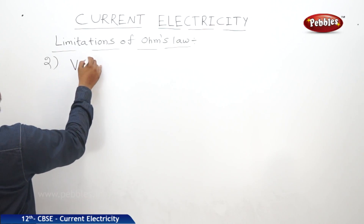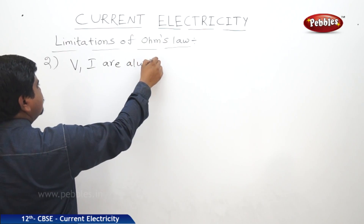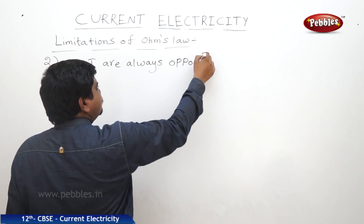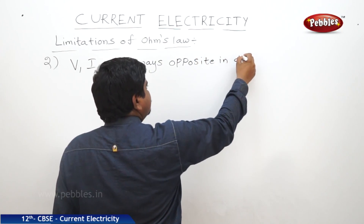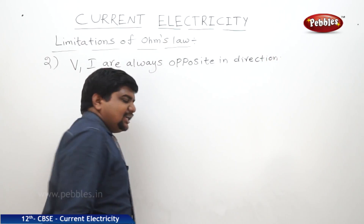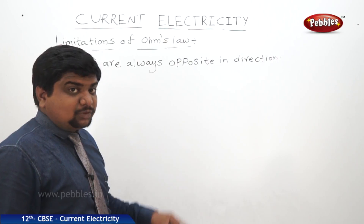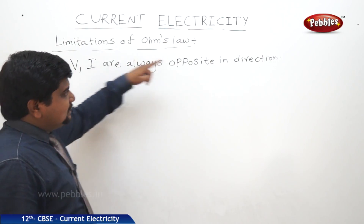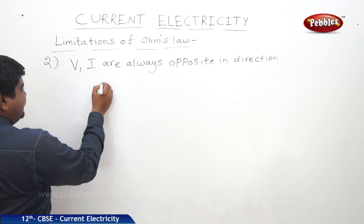V and I are always opposite in direction, but the magnitude will be the same because they obey the proportionality ratio. So while they obey the proportionality ratio, they are opposite in direction. The best example of this is connecting a diode.